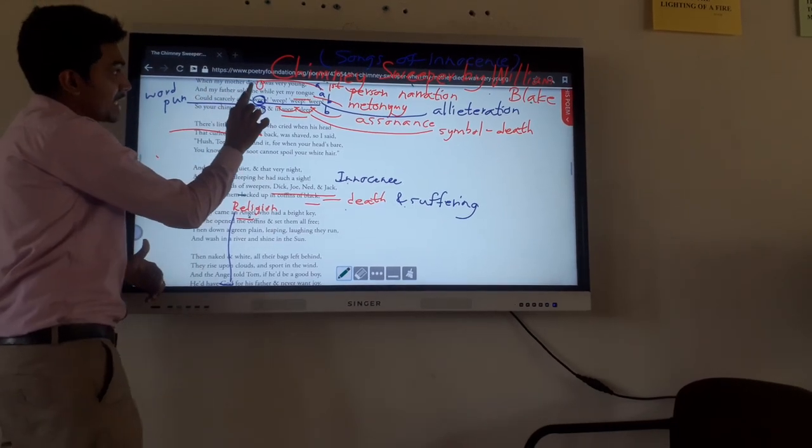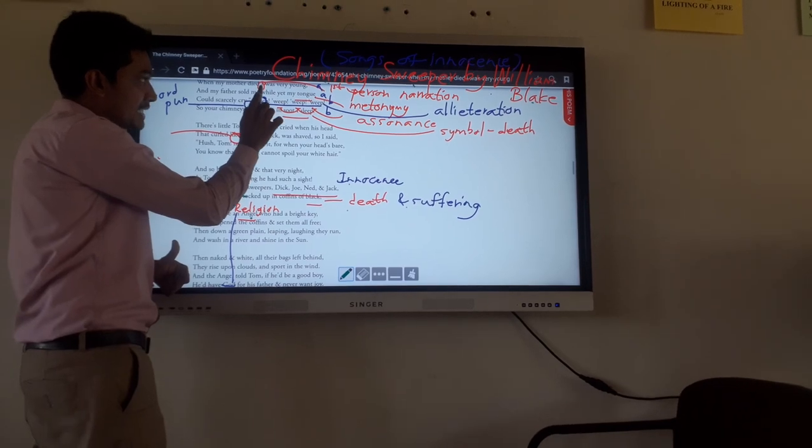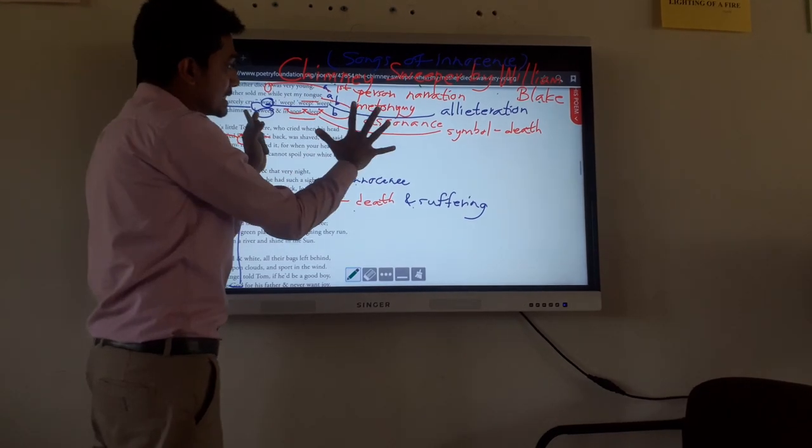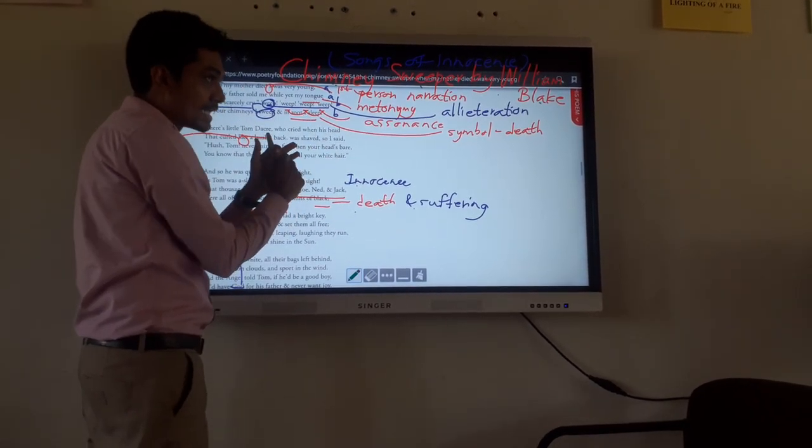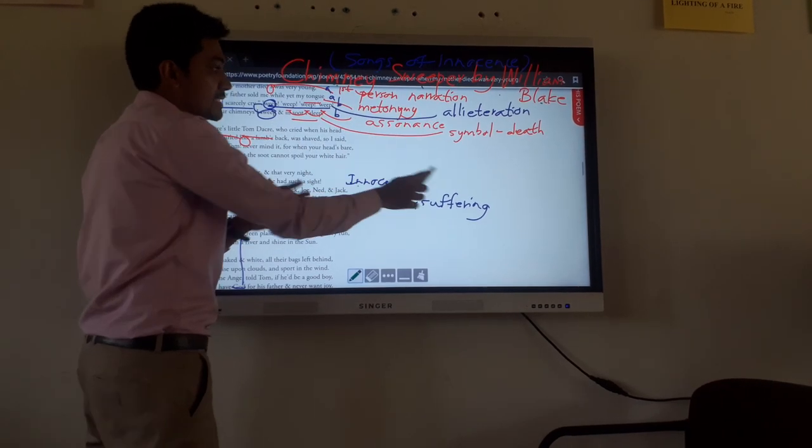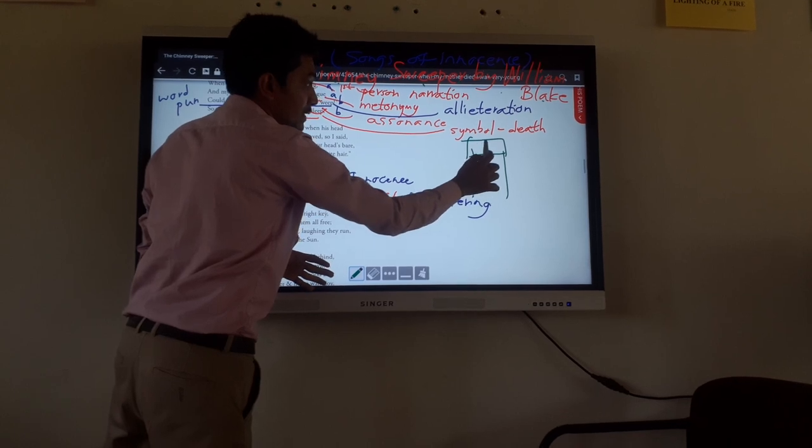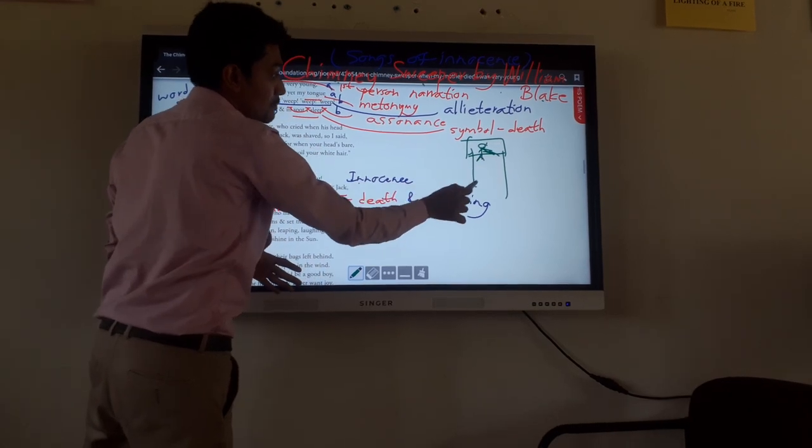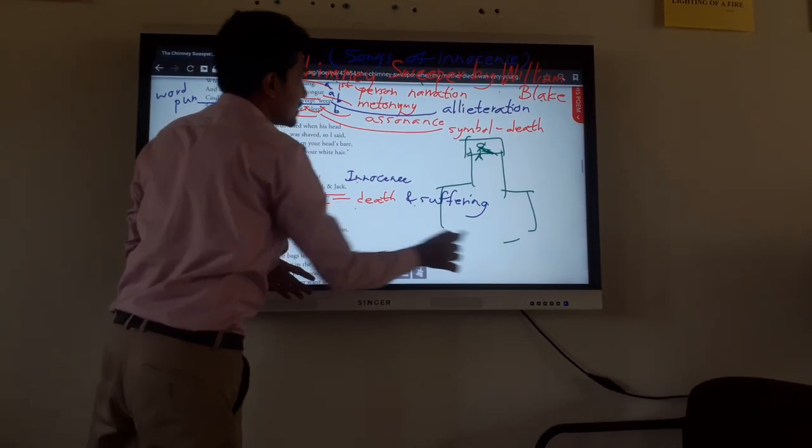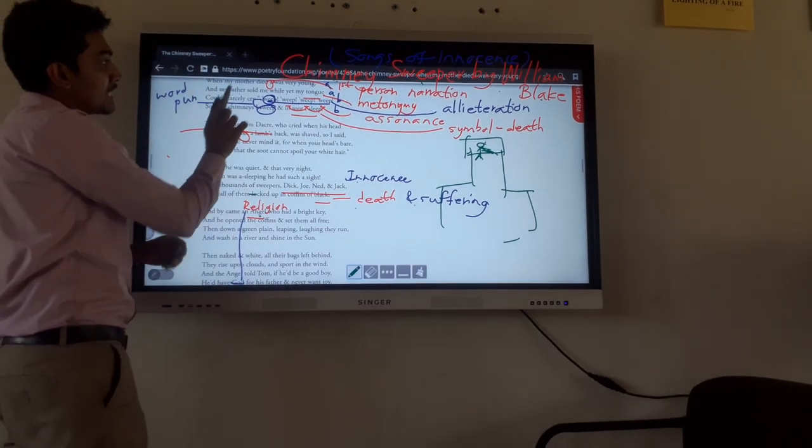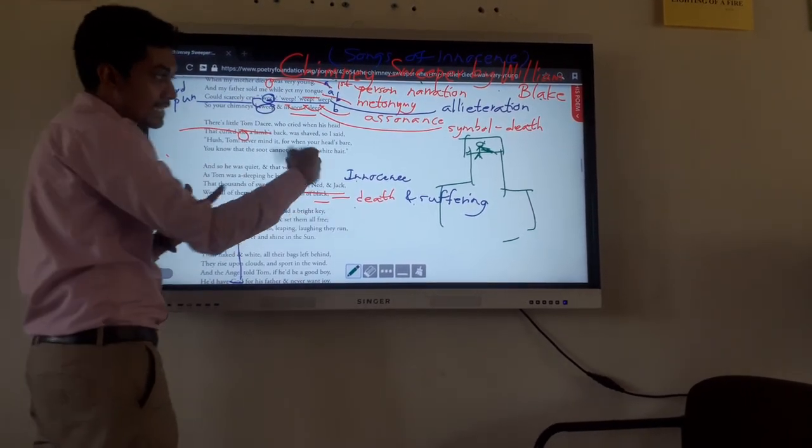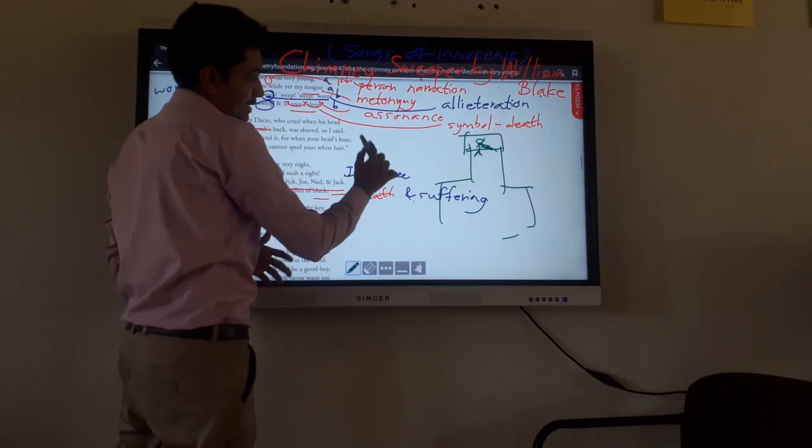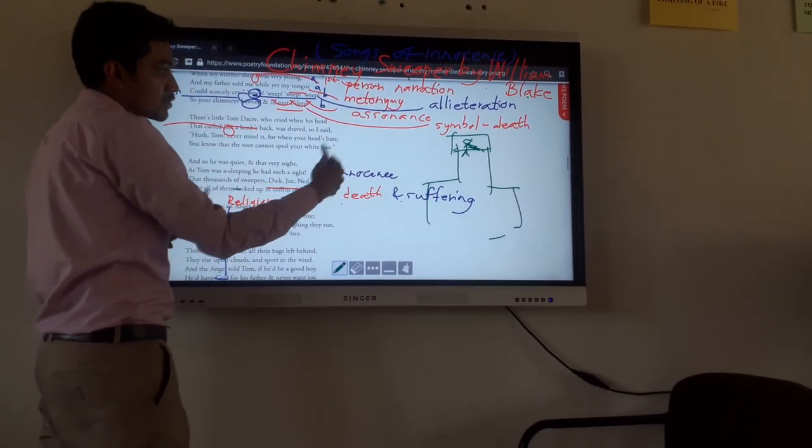When my mother died, I was very young. You can see the technique of first-person narration in the first line. According to this context, in London, small children were used to clean the chimneys. It was really a difficult task for a grown-up adult to clean the chimneys, therefore small children were used. He recollected his experience as a very young child. And my father sold me - the child labor, children were sold for money because of poverty.